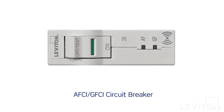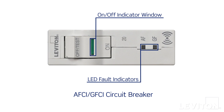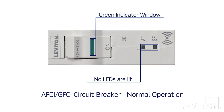Leviton circuit breakers feature easy-to-read diagnostics like the status indicator window in each rocker handle and built-in LED windows that flash when electronic breakers detect an issue. Under normal operation, the indicator window in the rocker handle shows up green and no LEDs are lit.